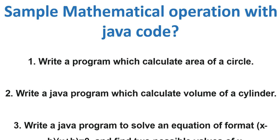The first one is a Java code which calculates the area of a circle. The formula to calculate the area of a circle is pi r squared. That's number one. We will select only one and work through it here.